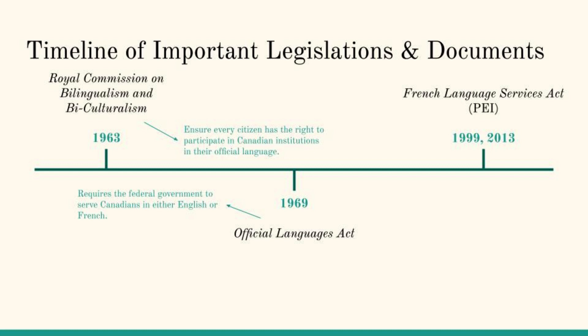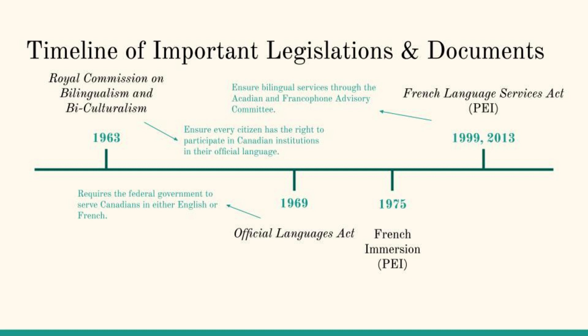The French Language Services Act, passed by the PEI government in 1999, requires some government services to be provided in French. Although many of its sections were not initially enacted, the Act was revised in 2013 to ensure the designation of bilingual services, the creation of the Acadian and Francophone Community Advisory Committee, and the establishment of a complaint mechanism. From these Acts, the French Immersion Program was introduced to PEI in 1975, initiated by the PEI Division of Canadian Parents for French. Another active organization is the Office of the Commissioner of Official Languages, responsible for achieving and promoting the objectives of the Official Languages Act. These documents and groups show the significant impact of legislation on the education system.